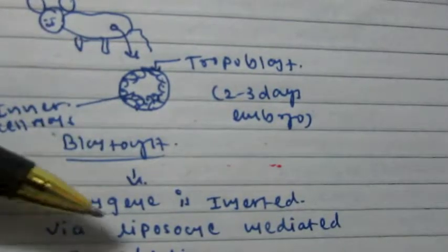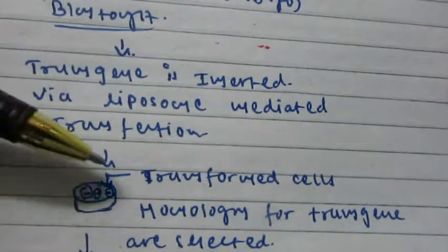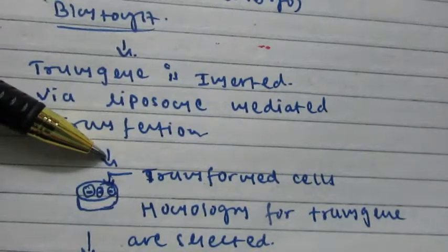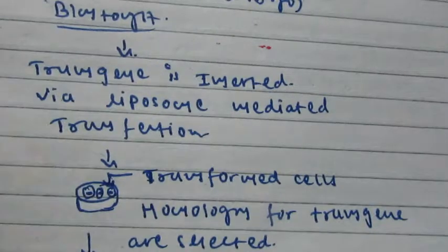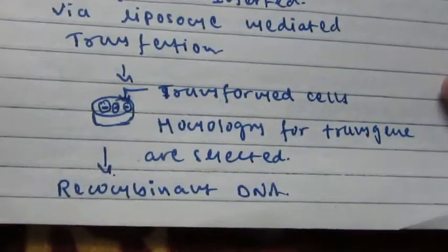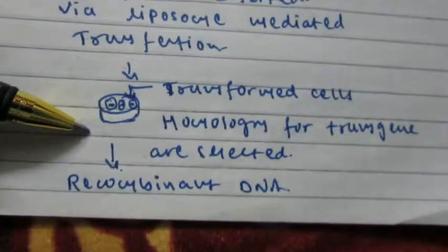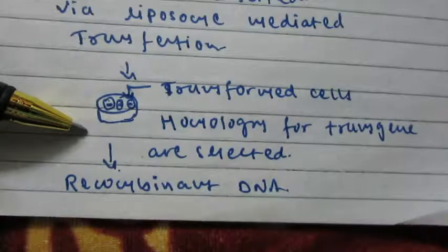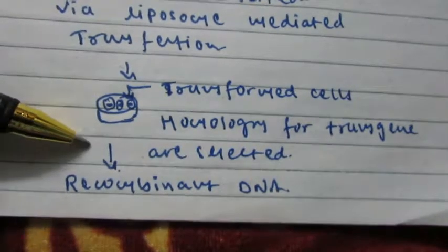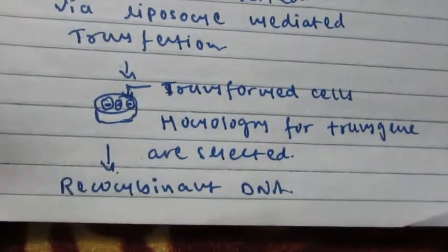This method is liposome-mediated transfection. Then transformed cells are selected which contain the transgene molecule. If there is homologous recombination between normal embryonic stem cells and the inserted transgene molecule, then the recombinant DNA will contain the transgene.